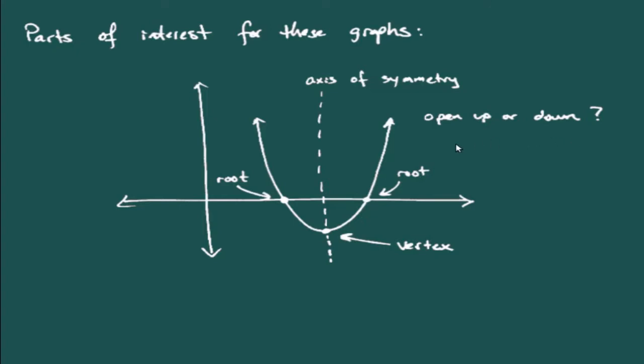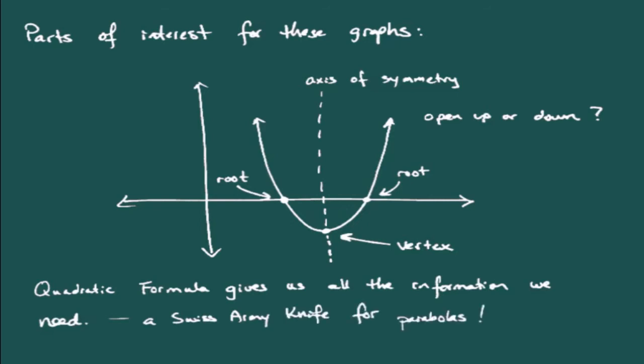So, all of that information, the quadratic formula will actually give us all that information. It's going to give us all the information we possibly need to know anything that we would be interested in about these parabolas. And so, the quadratic formula, we can really think of it as being a Swiss Army knife for these kinds of problems. It's got everything you could possibly need. It's got those tools all in one location and that's what the quadratic formula is. If you know how to read it correctly and know how to get the information out of it, then it will give you a wealth of information.